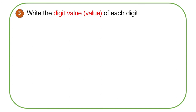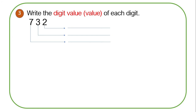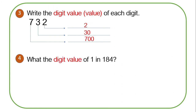In part three, we want to write the digit value of each digit. Note that digit value can also simply be called value — if I talk about value, I mean digit value. For the number seven hundred and thirty-two: the digit value of two is two, the digit value of three is thirty, and the digit value of seven is seven hundred. In part four, we want to know the digit value of one in one hundred and eighty-four — the digit value of one is one hundred.